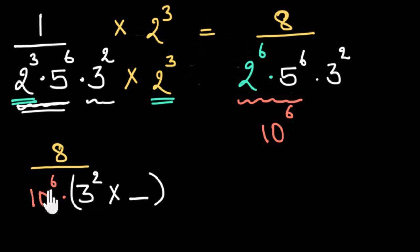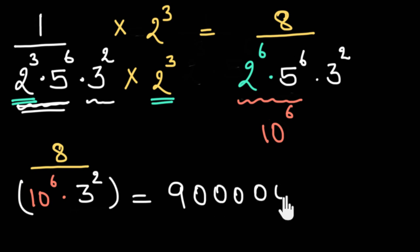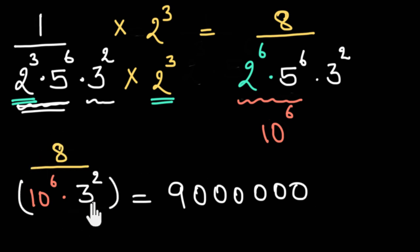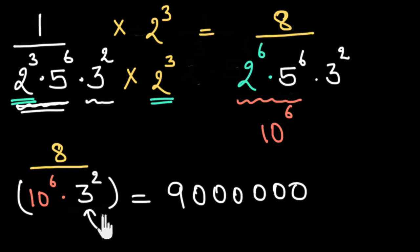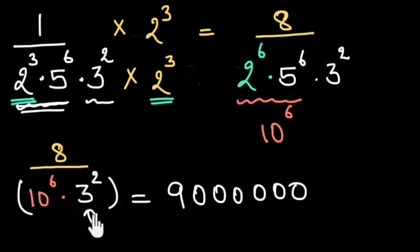For example, 10 to the power 6 times 3 squared gives us 9 followed by 6 zeros, which is not a power of 10 — we cannot write it in the form 10 squared, 10 cubed, 10 to the power 4, etc. That is why its decimal form would not be terminating. And this is not only true for 3 — any other prime number other than 2 and 5, whether it be 7, 11, 19, 23, 13, etc., would never give us a power of 10 in the denominator, and hence would never make the decimal form terminating. So if we have any other factor other than 2 and 5, the decimal form would be non-terminating and recurring.